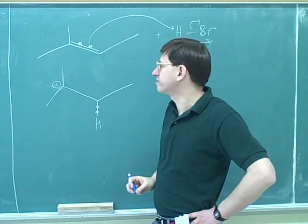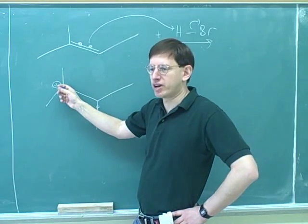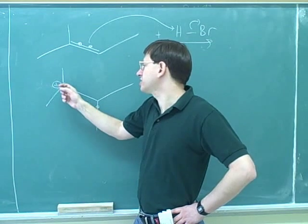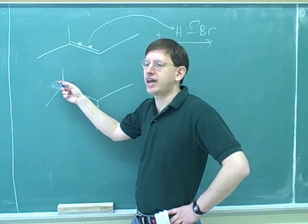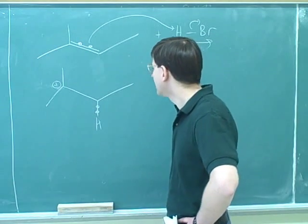And again, it's better to form the more substituted carbocation. Why? Well, hopefully we remember from previously, carbon chains are electron-donating. We just have to have it memorized that carbon chains are electron-donating. So the more carbon chains there are around the positive charge, the happier it's going to be.